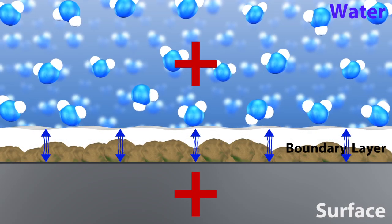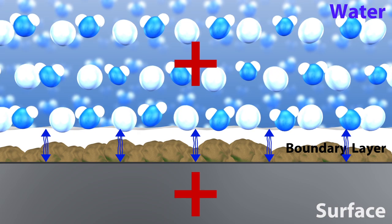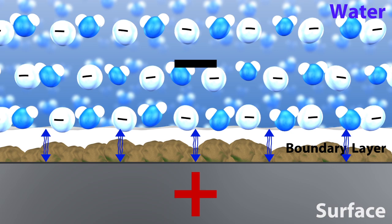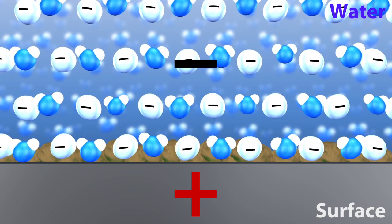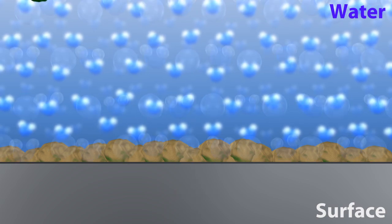This is what happens when nanobubbles are introduced to raw water. Simply put, nanobubbles change the polarity of the water molecules so the water and the surface are attracted to each other, eliminating the boundary layer and allowing the water to reach the surface to clean.